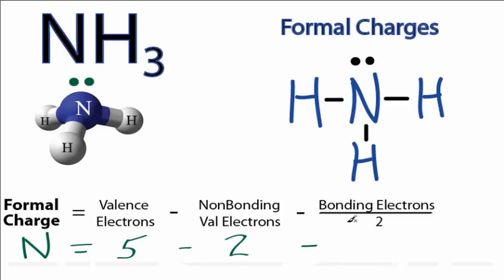And then we'll subtract the bonding electrons. And we have bonding electrons here, here, and here. So we have a total of 6 bonding valence electrons, which we'll divide by 2.